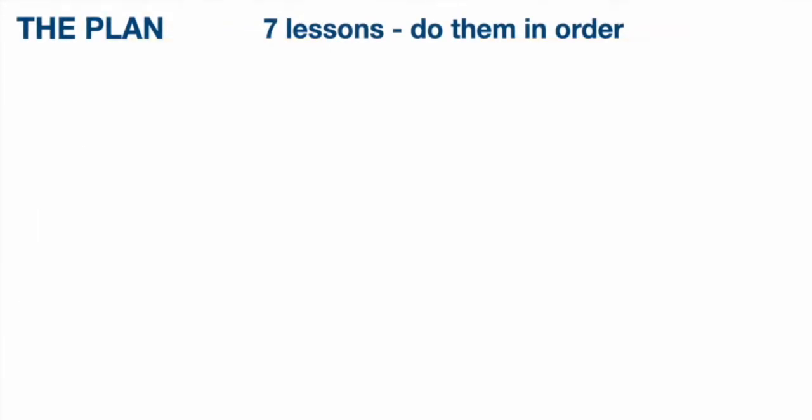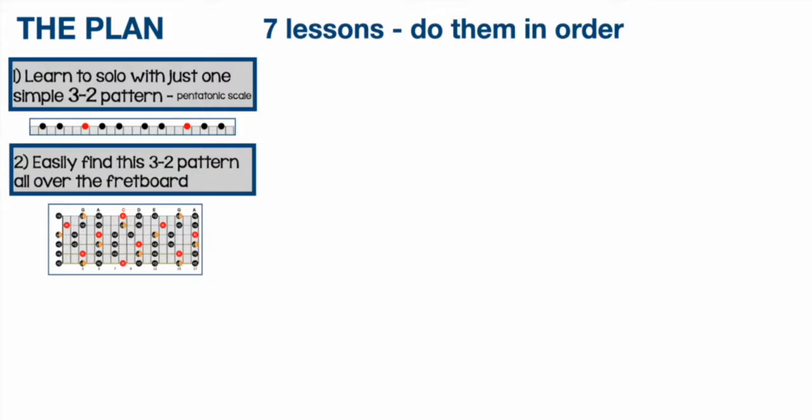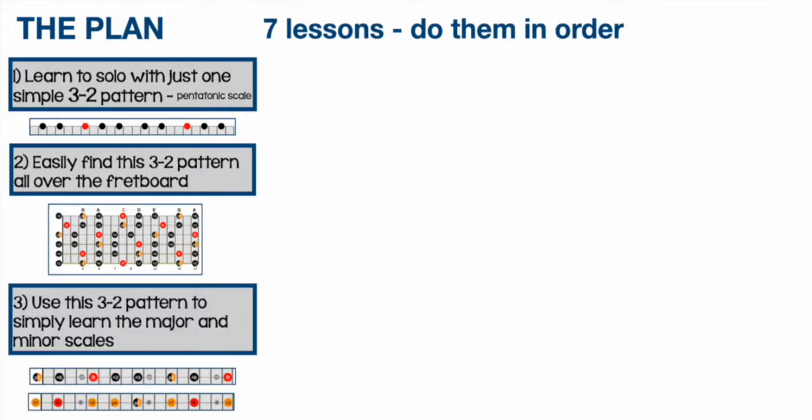So the plan is to do seven lessons and I would encourage you to do them in order. The first one will be just how to learn to solo with just one simple pattern. The second one will be how do you use this pattern all over the fretboard. The third one is how do you use this three two pattern to simply learn the major and minor scales.